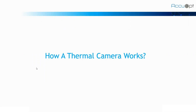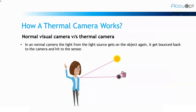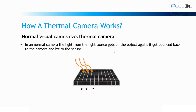Now we will see how a thermal camera works. Before explaining the thermal camera working, I would like to explain the normal camera working, or how a DSLR, a visual camera, or a CCTV camera works. In a visual camera, there is a source light which throws light over the object and this light gets bounced back to the visual camera. This light hits the surface of the sensor, and due to the collision of photons, some free electrons are generated. These free electrons form electronic signals and further image processing takes place.